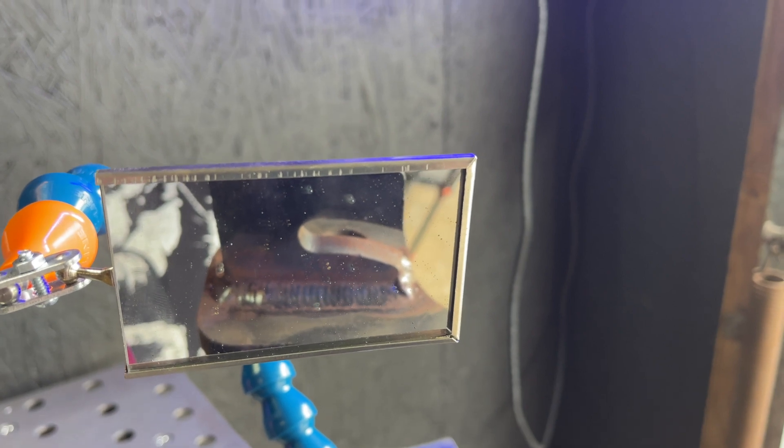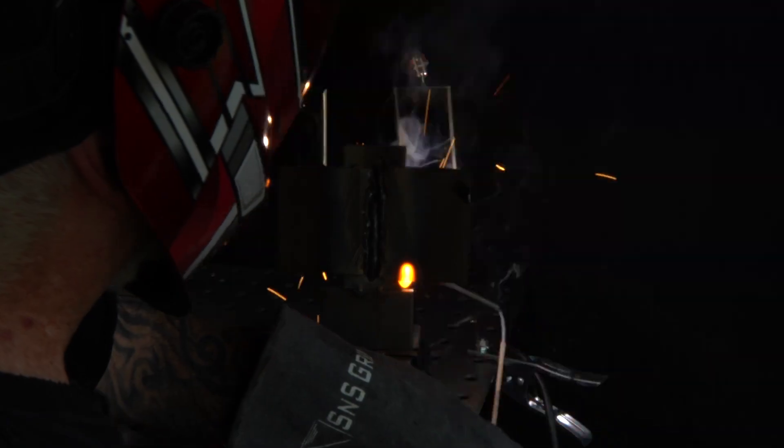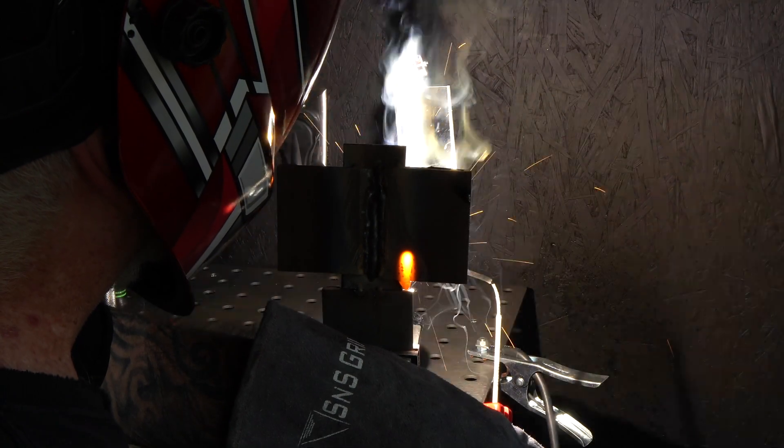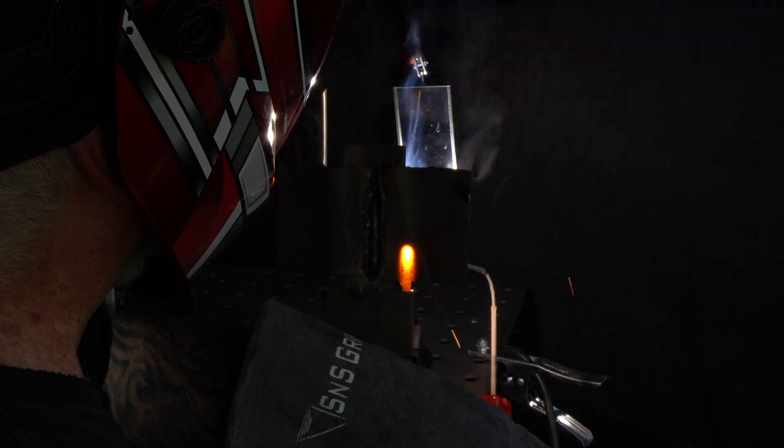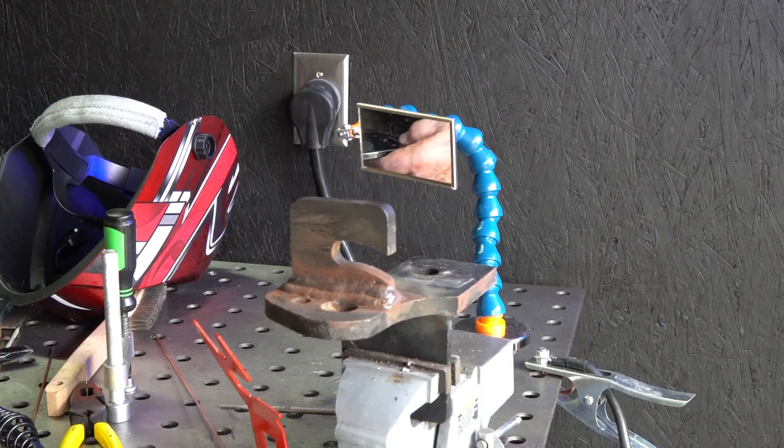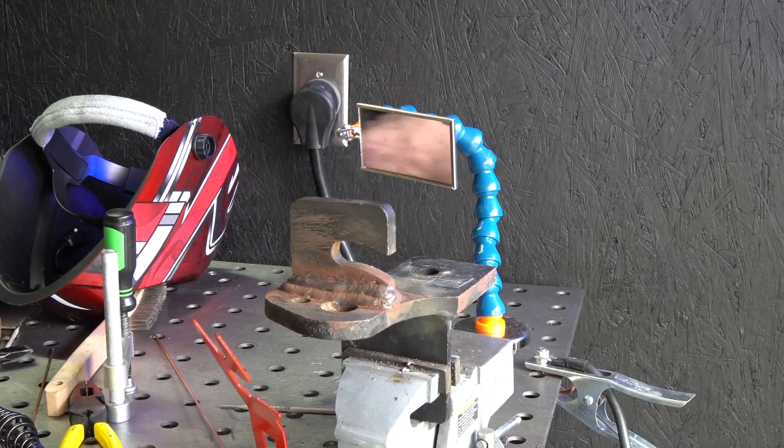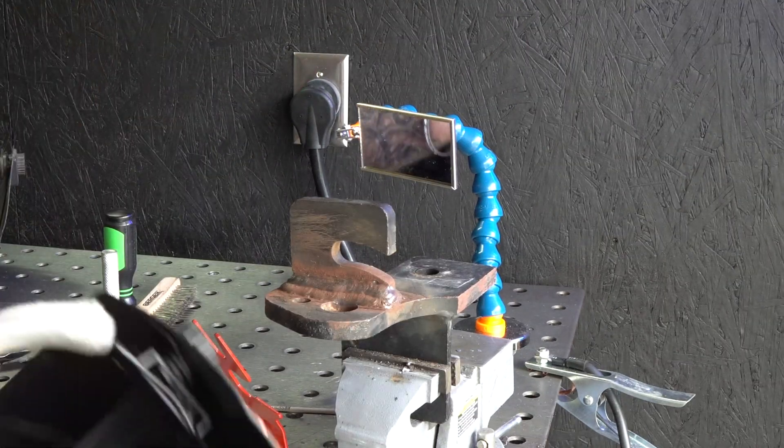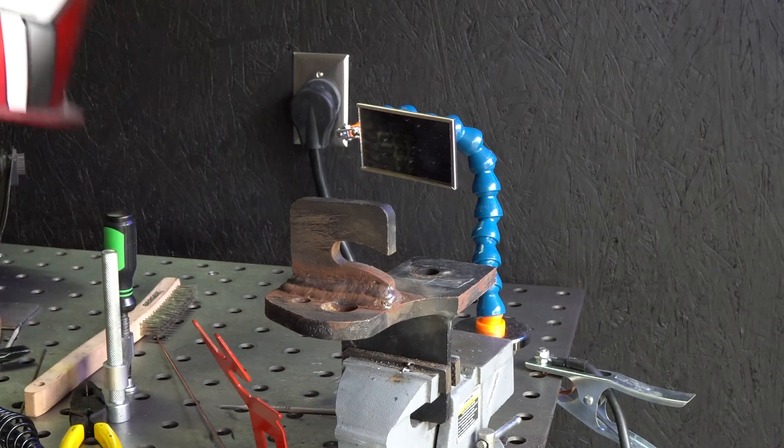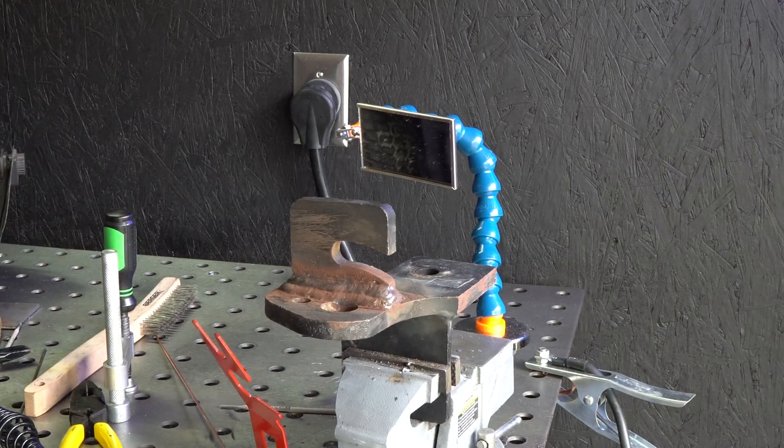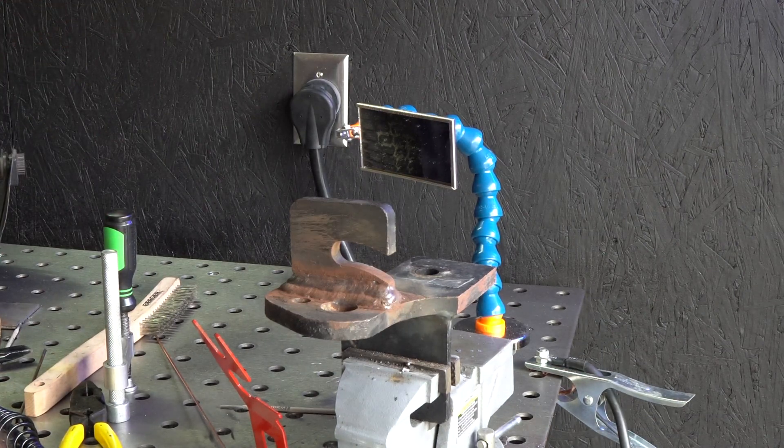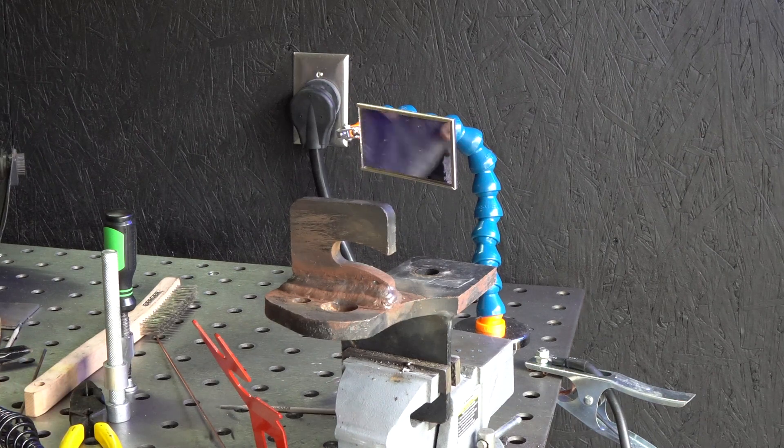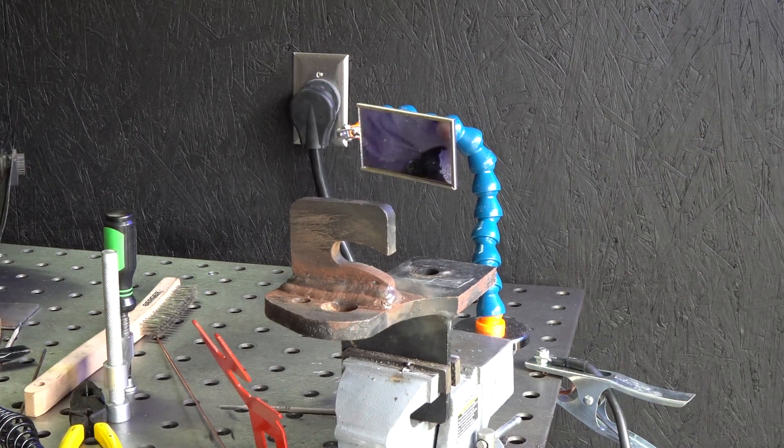Now it's a downhand weld which is going to be your easiest out of all of them. Once you master that, move into vertical, and then overhead is going to be almost as easy as flat like this. It truly is in my opinion, but to me that's kind of an easy weld. Now I did jack my heat up to 100. But like the old saying goes, practice makes perfect and that's true with really pretty much everything.